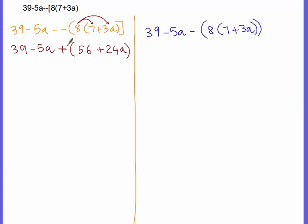Now, there is an imaginary one right here always, so we got to take care of this. Next. All right. So we're going to carry that with 39 minus 5a. Okay, 1 times 56 would still be 56. 1 times 24a would still be 24a.